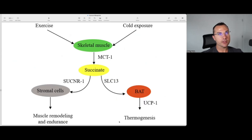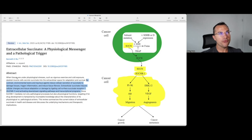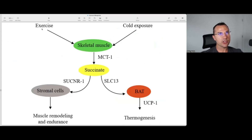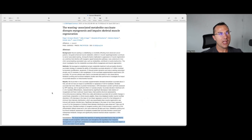The article is basically saying succinate can be a normal physiologic messenger under certain conditions like exercise or cold exposure — which is how it leads to changes in muscle cells and thermogenesis or weight loss — but when we have excess succinate that is constitutively activated and present in super-physiologic amounts, that can damage muscle cells and their ability to regenerate.